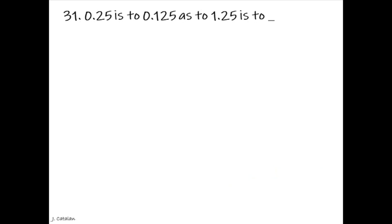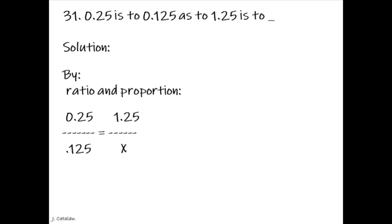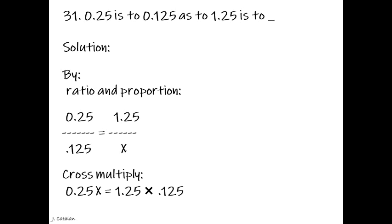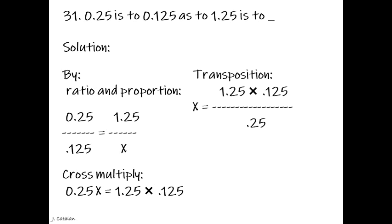0.25 is to 0.125 as 1.25 is to underscore. Solution. By ratio and proportion: 0.25 over 0.125 equals 1.25 over x. Cross multiply: 0.25x equals 1.25 times 0.125. Transposition: x equals 1.25 multiplied by 0.125, divided by 0.25. The result is x equals 0.625.